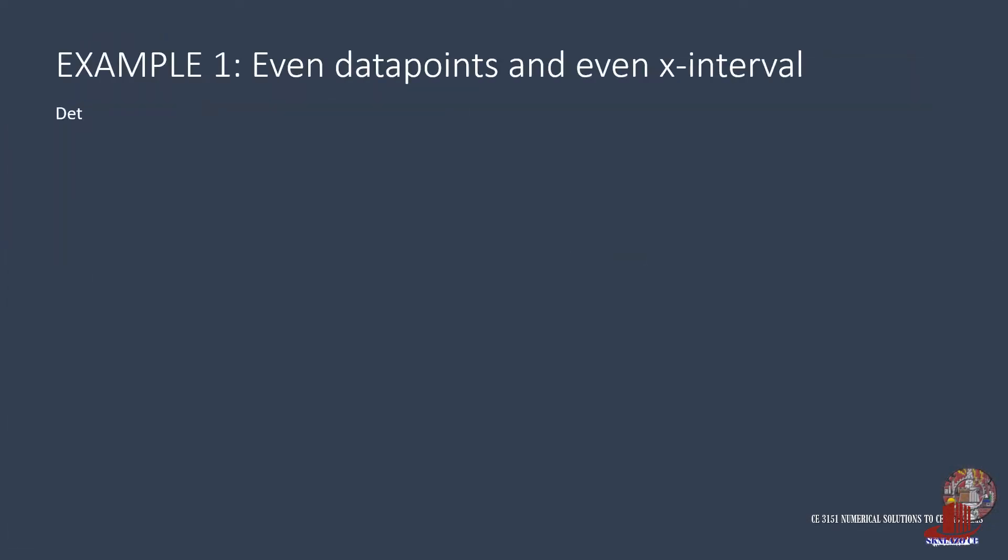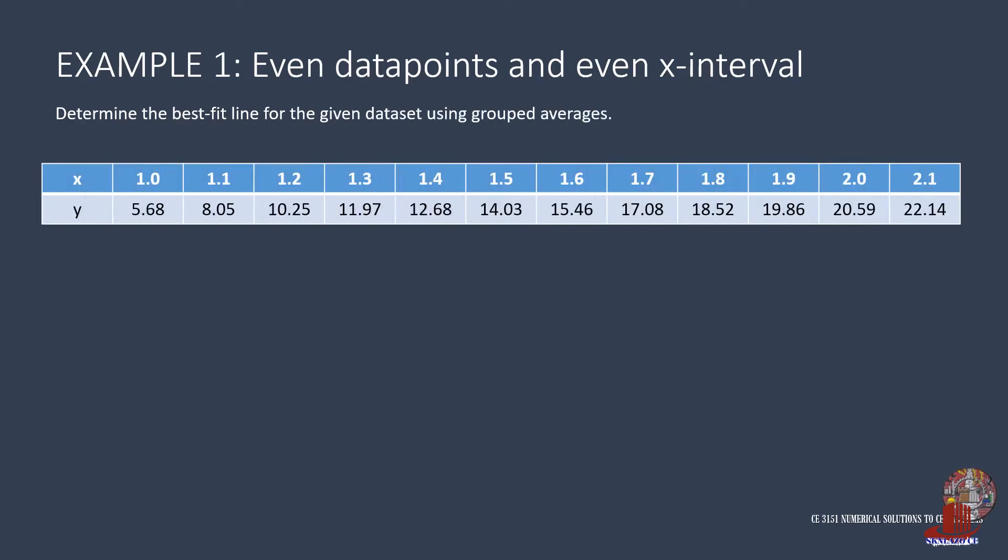The first example showcases even number data points and even x interval. We are to find the best fit line for the 12 data points where we are to break them down into two groups, where each has six data points.